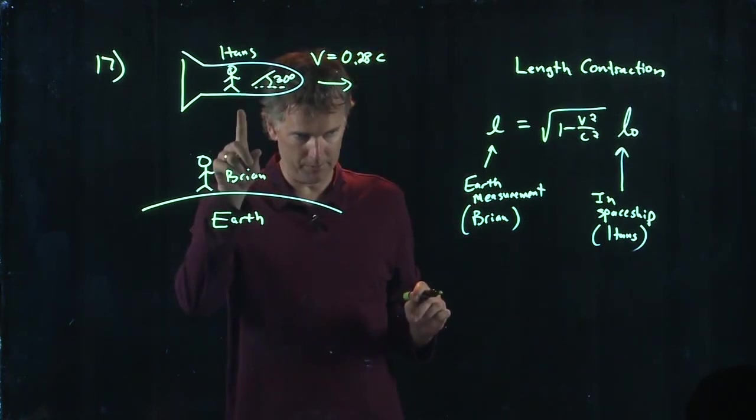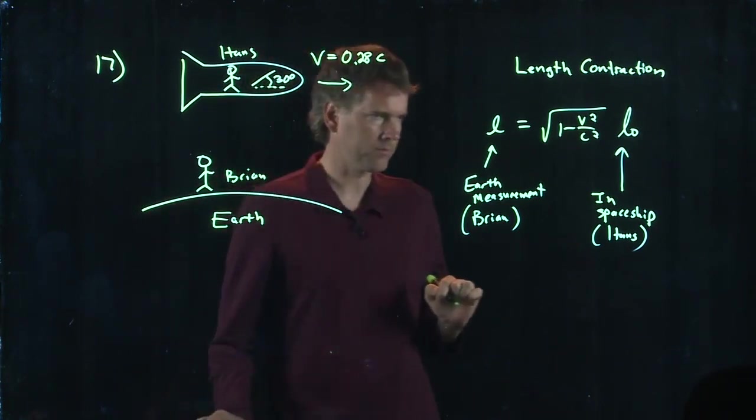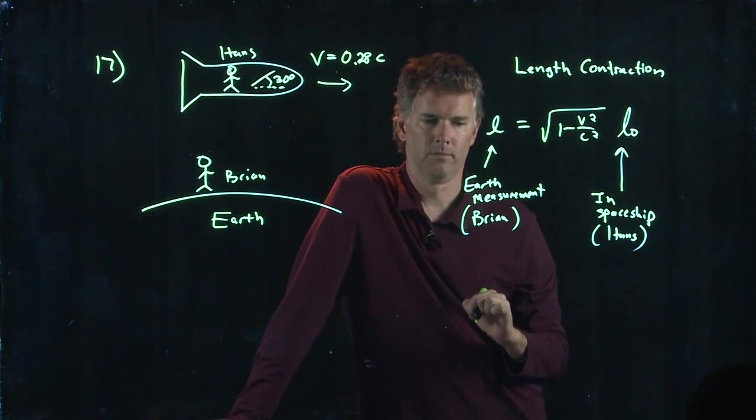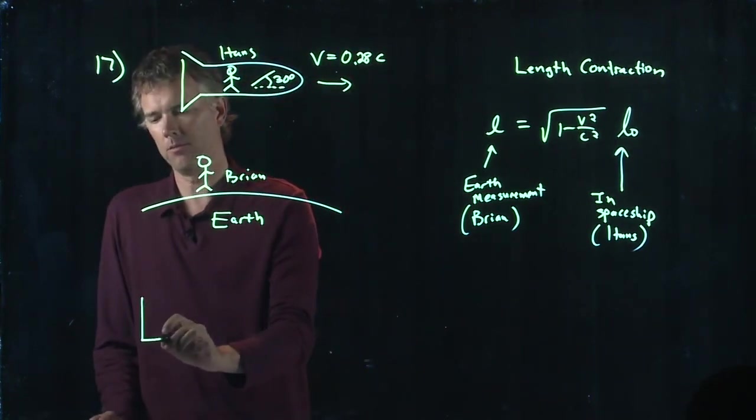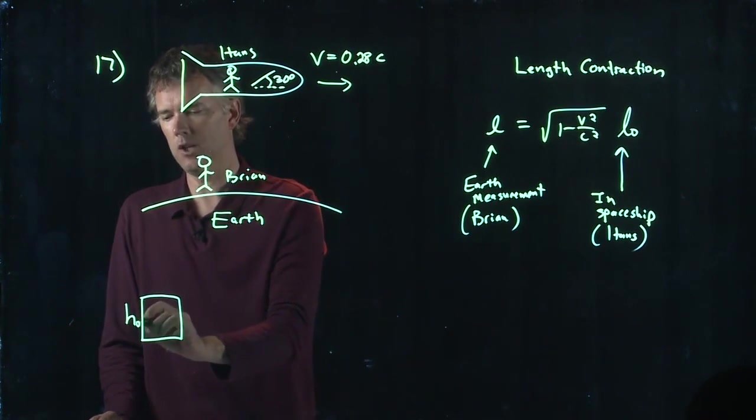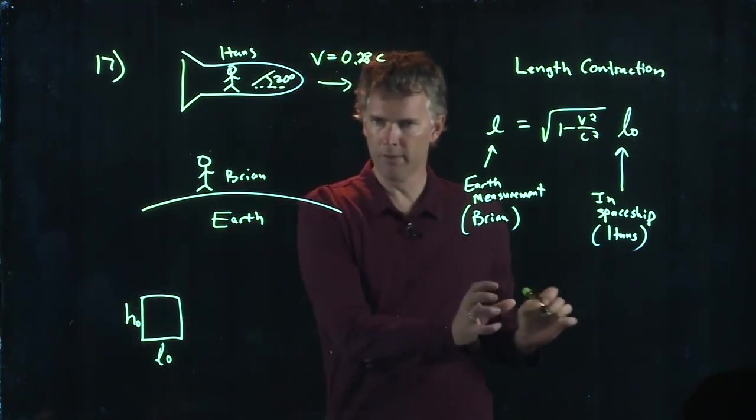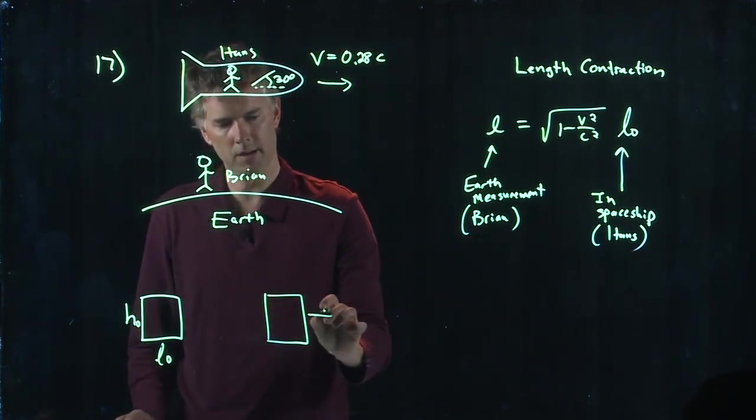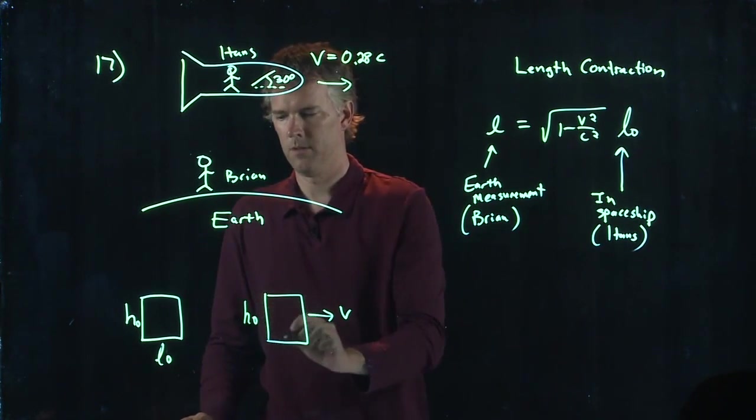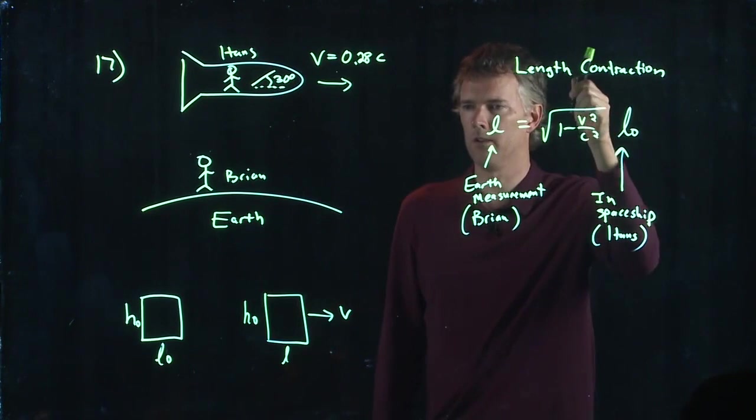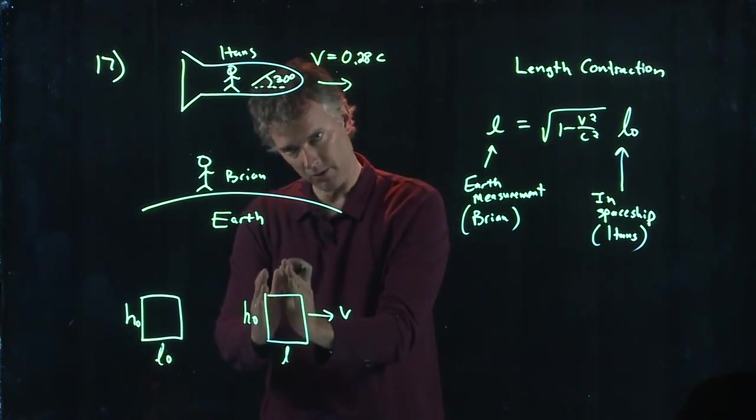But they're not asking about the length of the pencil. They're asking about the angle that it makes relative to this horizontal axis. What we said in class yesterday was, imagine you have a box. And that box has height H-naught and length L-naught. And now you take that box and you start moving it at some fast speed, V. Does the height of the box change? No. The length changes. This length contraction is only in the direction of motion.